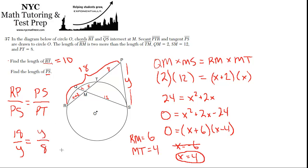So 18 over Y equals Y over 8. So we can cross-multiply. Y squared equals 8 times 18. 80 plus 64 is 144. So Y is the square root of 144, which is 12. So PS equals 12.